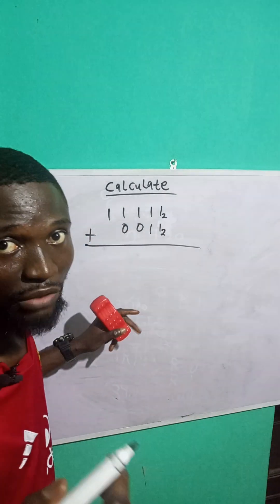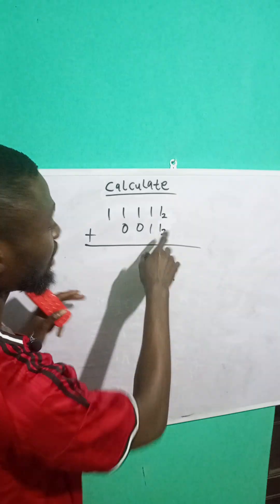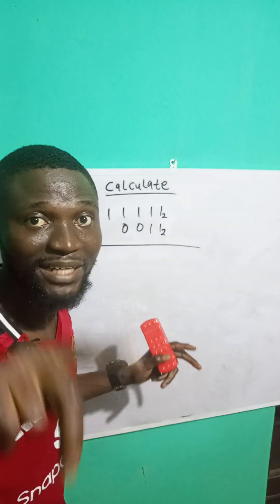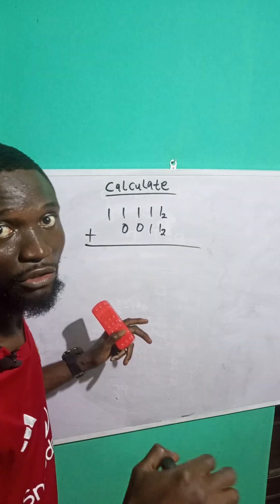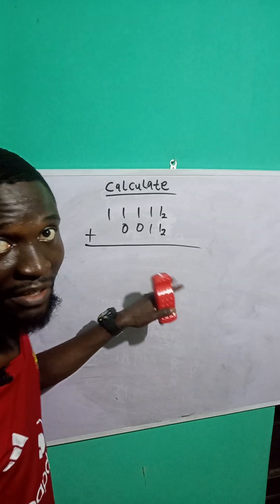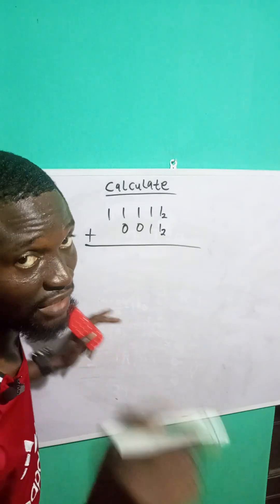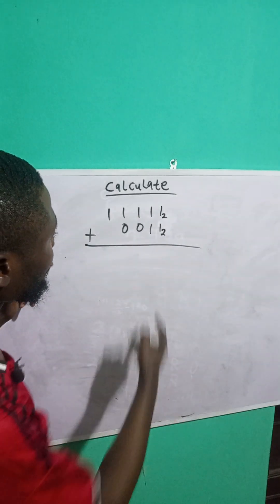So this means that when you add two numbers and you get a result of 2 or a number bigger than 2, what you are going to do is divide that number by 2, add the remainder, and take the quotient (carry) to the next level. Let me demonstrate it here.